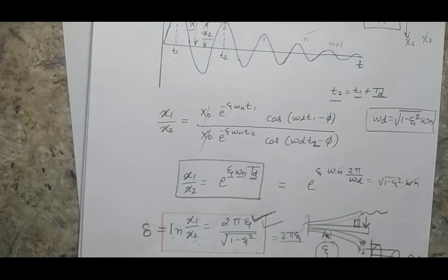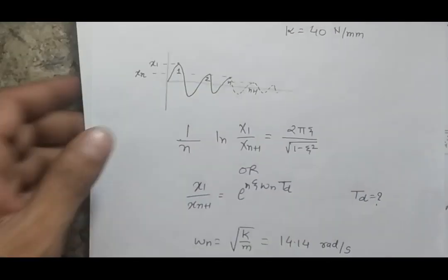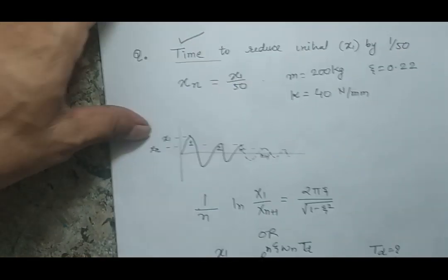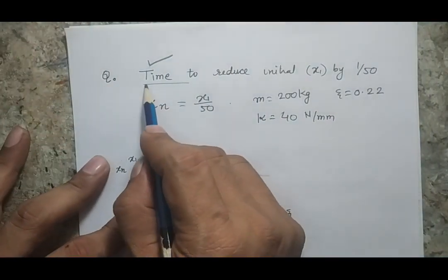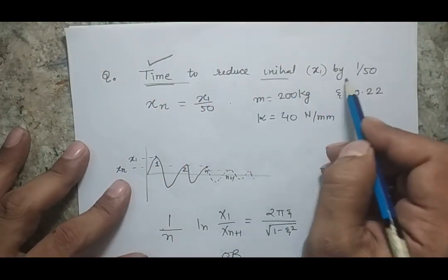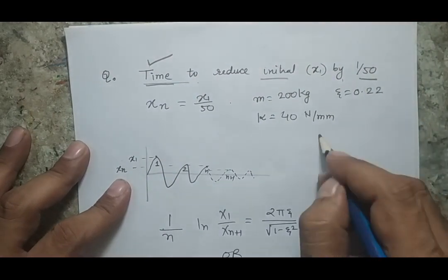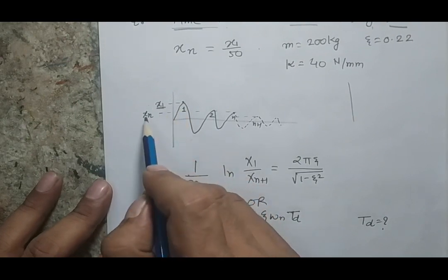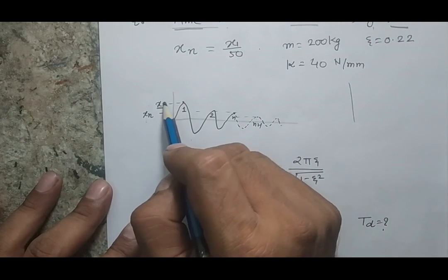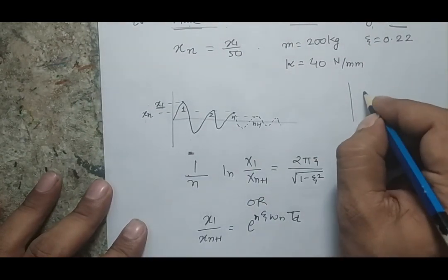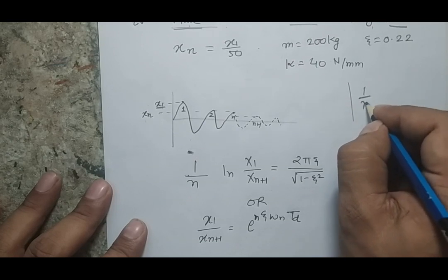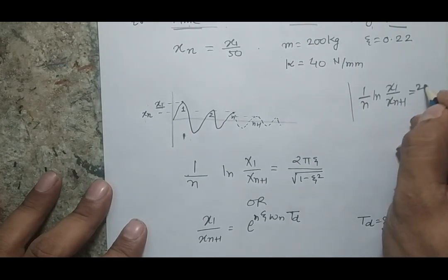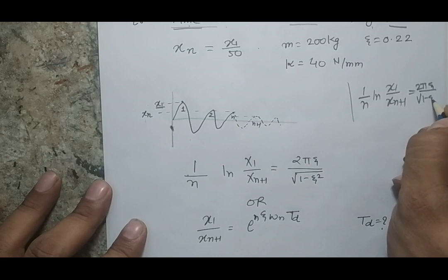Now I am solving a small numerical problem. In this question, you are given the system parameters and you have to find the time required for the amplitude to reduce by a factor of 50. That means if the initial amplitude is x1, the amplitude drops to x1/50. I will apply the formula: (1/n) · ln(x1 / x_{n+1}) = 2πζ / √(1 − ζ²).